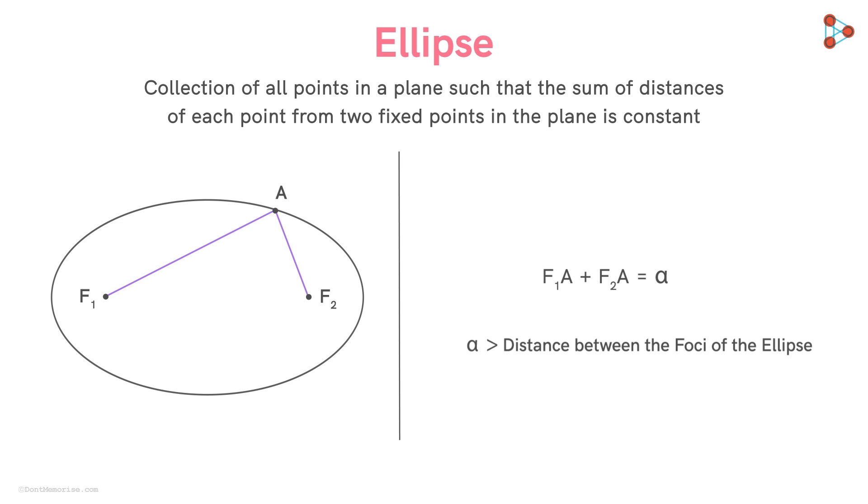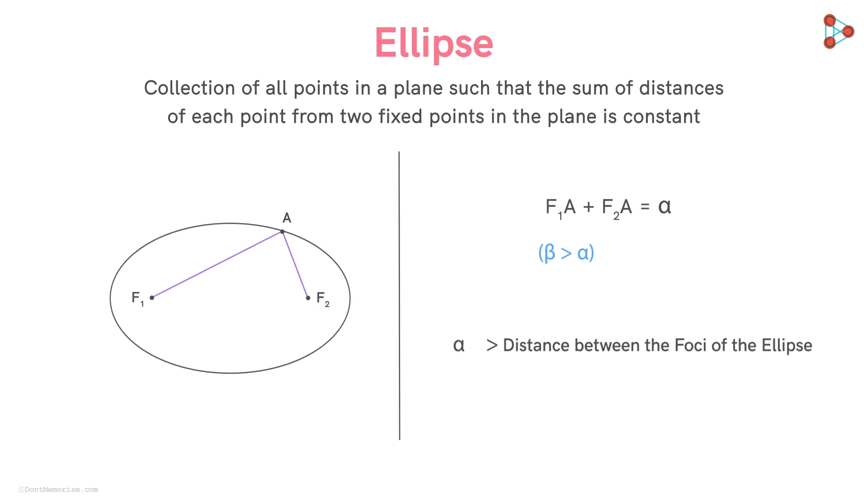Now suppose we want the constant sum of distances to be beta. Let's say beta is greater than alpha. Then the set of points corresponding to this constant beta will be this ellipse.